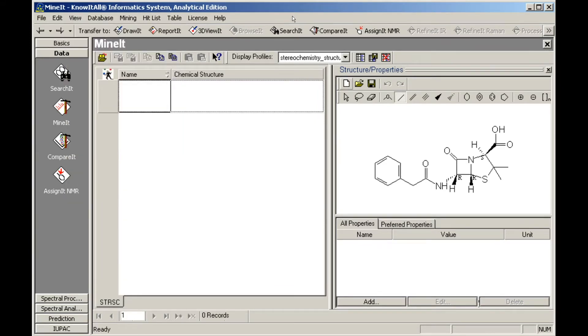Click Save to add the structure to the database record. The structure now appears in the database pane. Resizing the rows makes it easier to see the structure.